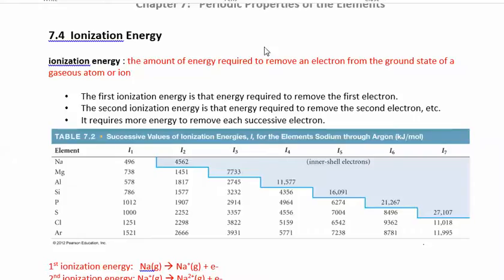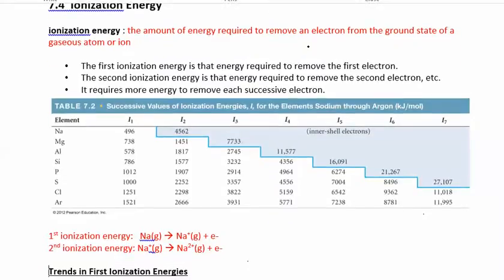Section 7.4 is on ionization energy, which is the amount of energy required to remove an electron from a ground state atom or ion. When you're removing electrons, you're making a cation.